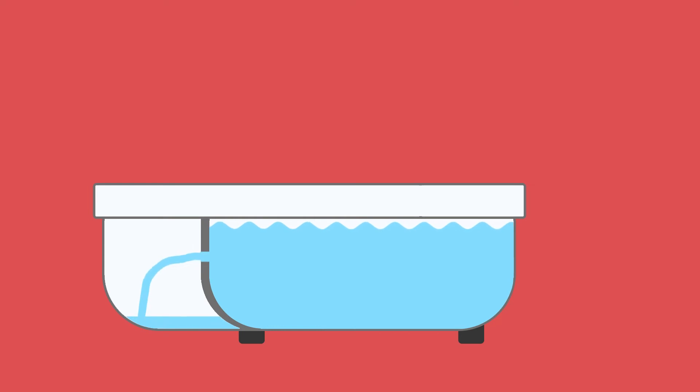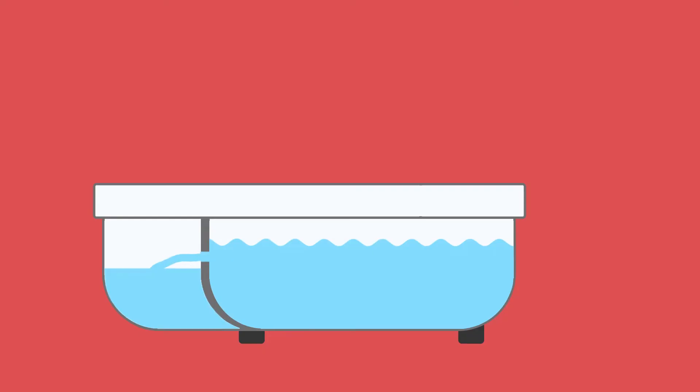Do we take the dam away? No — we open a little door in it and let the data trickle through. So instead of a big flood rush, you get a nice, controlled flow. Now everything is even again.